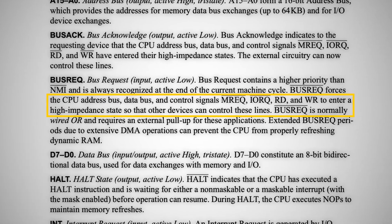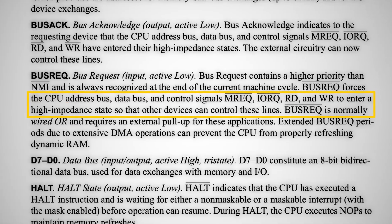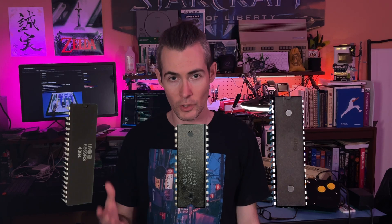The Z80 manual says that in the bus request state, the address bus, data bus, and control signals enter a high impedance state. In electronics, this is called 3-state logic, where an output signal can either be driven high or low, or alternatively made high impedance, or floating, so that another device can drive the signal instead. This is crucial in a computer bus, where multiple devices like the CPU, memory, and so on are all wired directly together, and only one of those devices should be driving any given wire at a time, with the rest being high impedance.